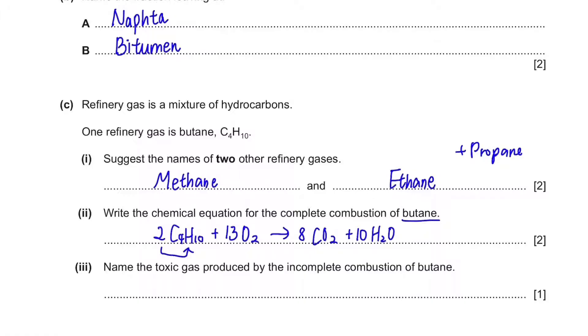Name the toxic gas produced by the incomplete combustion of butane. It doesn't really matter if it's butane or methane — if it's incomplete combustion, the answer is always carbon monoxide.